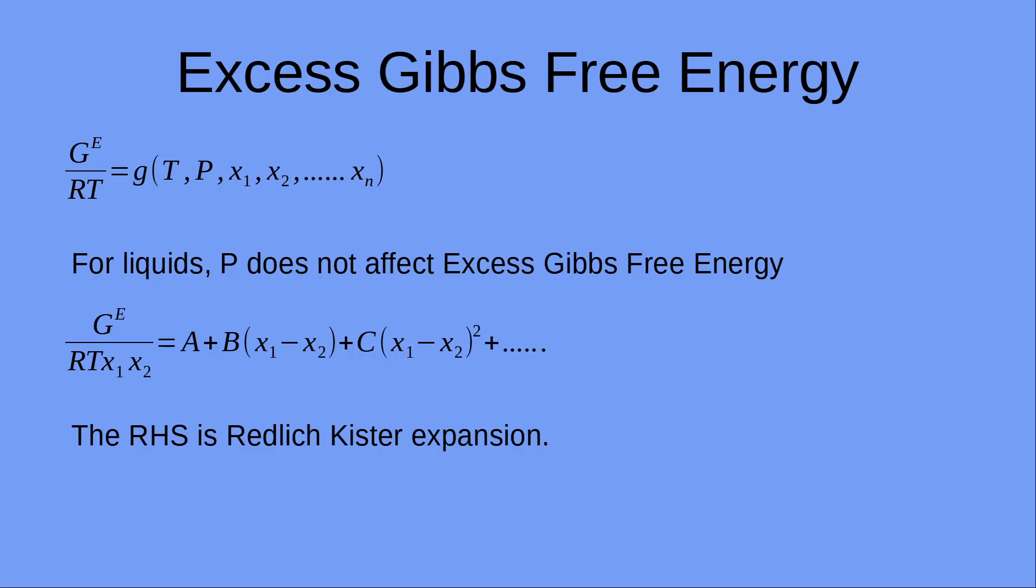The excess Gibbs free energy over RT times x1 x2 can be written as a linear expansion which is A plus B times (x1 minus x2) plus C times (x1 minus x2) squared and so on. The right hand side is the Redlich-Kister expansion.